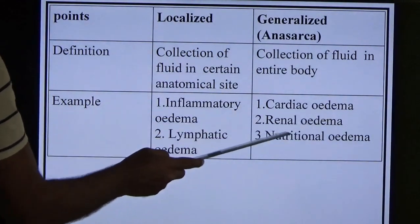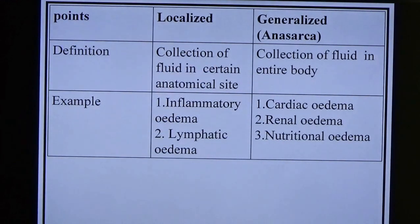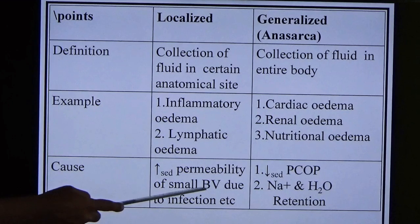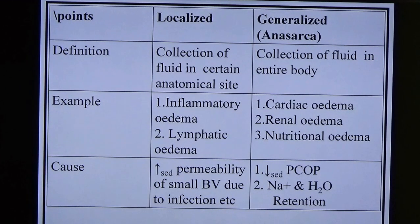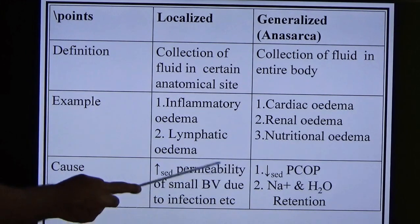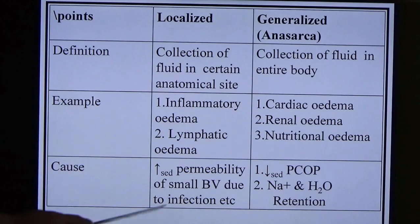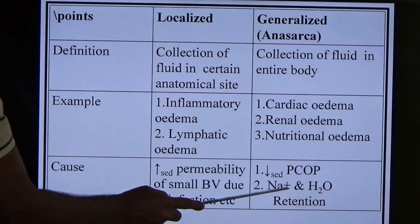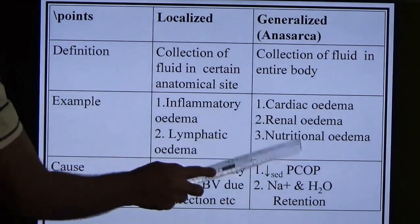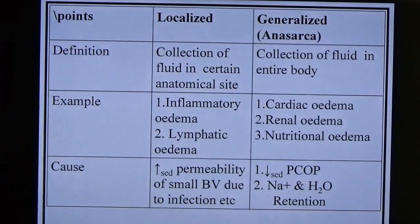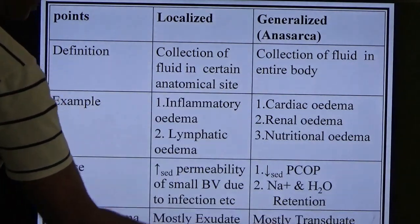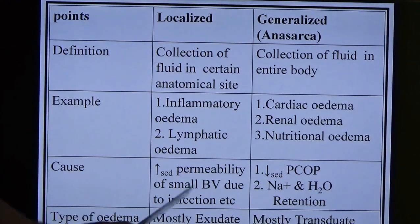Generalized edema (anasarca) includes cardiac edema, renal edema, and nutritional edema. Causes of localized edema: decreased permeability of small blood vessels due to local infection (e.g., eye swelling in eye infection). Causes of generalized edema: decreased PCOP and sodium-water retention. Important for MCQs: localized edema is always exudate; generalized edema is mostly transudate.